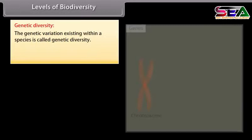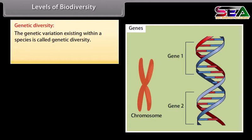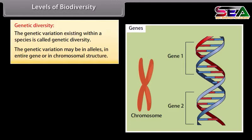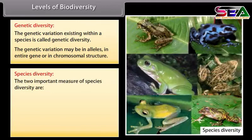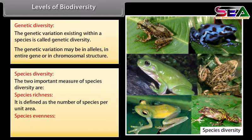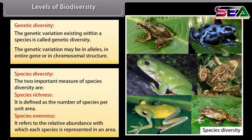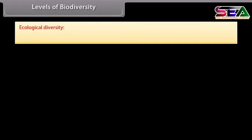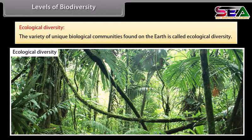Levels of biodiversity. Genetic diversity refers to the genetic variation existing within a species, which may be in alleles, entire genes, or chromosomal structure. Species diversity has two important measures: species richness, defined as the number of species per unit area, and species evenness, which refers to the relative abundance with which each species is represented in an area. Ecological diversity is the variety of unique biological communities found on the earth.